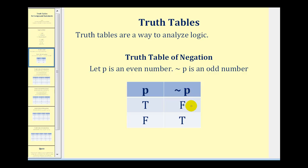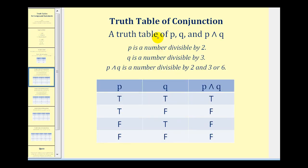Now let's look at the truth table for conjunction. We'll make a truth table including P, Q, and P AND Q — three columns. Because there are two options for P and two options for Q, we need four rows to list all possible combinations: true/true, true/false, false/true, and false/false.